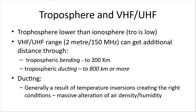The lower layer of the atmosphere is the troposphere. Our VHF and UHF range — around the two-meter range — can get additional distance through troposphere bending. Normally UHF and VHF are good for 100 kilometers, but from tropospheric bending it can reach 200 kilometers. Then there's an atmospheric effect called tropospheric ducting that can occasionally stretch transmission to 800 kilometers or more — sort of like a wormhole in space except it's a duct in the air. It's generally a result of temperature inversions creating just the right conditions — a massive alteration of air density and humidity.